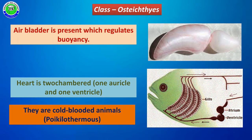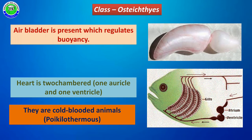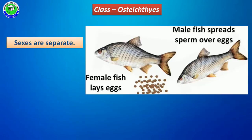These are also called cold-blooded animals, known as poikilotherms. They do not have the ability to regulate their body temperature. Whatever temperature is present in their surroundings, the same temperature is maintained inside their body. Such animals are called poikilothermic animals.